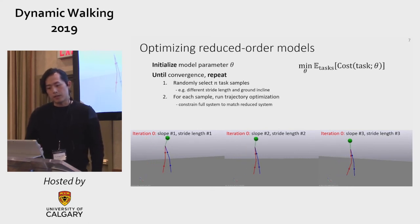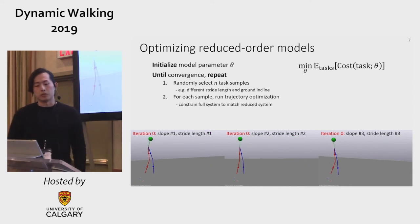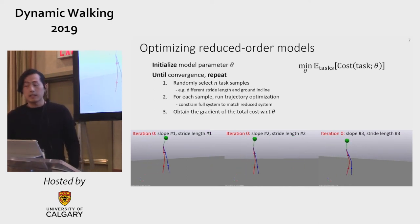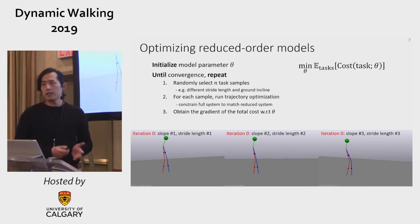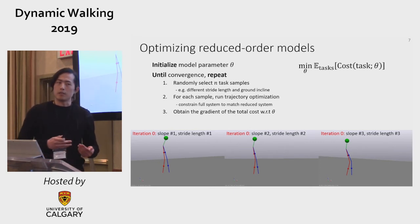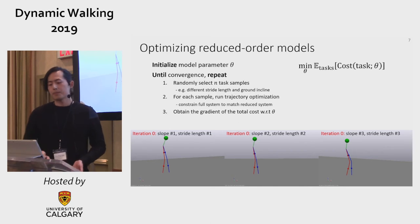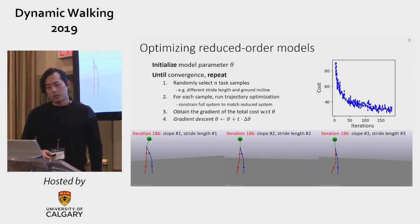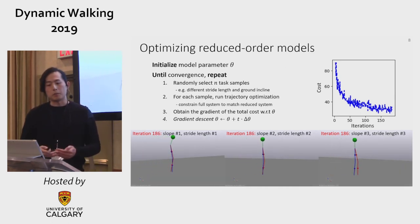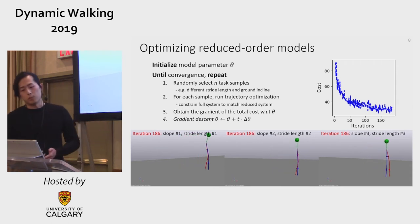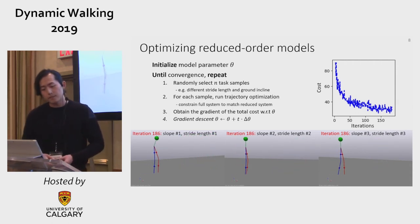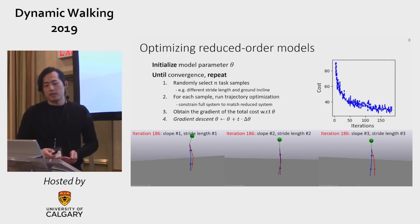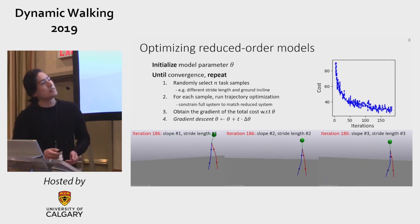Here are the results of the trajectory optimization with the initial reduced order model. Next, I add all the costs together and calculate the gradient with respect to the model parameter, then perform gradient descent. I repeat this until the model converges. Here are the results of the trajectory optimization after 186 iterations — the robot walks much smoother.